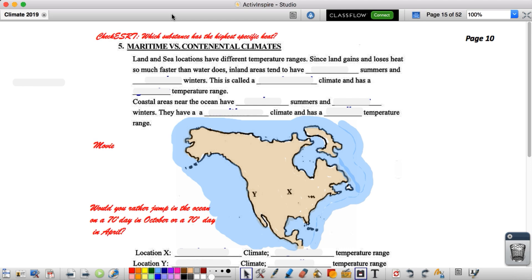Okay everyone, now we're going to take a look at how the ocean affects our climate. Not just currents, but now there's other ways. Let's start this off with a question to give you something to think about. I have that question down here in the South Pacific Ocean. Would you rather jump in the ocean on a 70-degree day in October or on a 70-degree day in April?